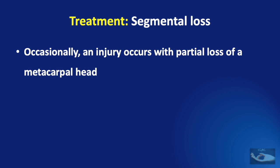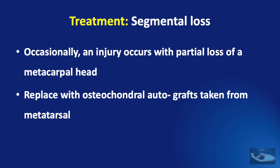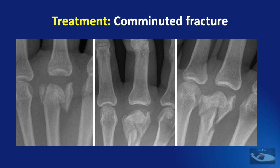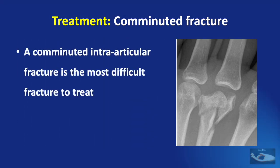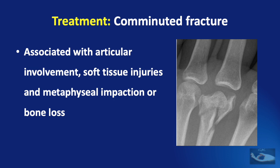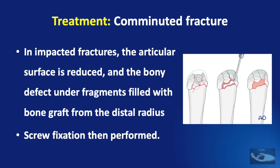In metacarpal head fractures with segmental bone loss, it is important to replace the bone loss with osteochondral autografts taken from the metatarsal bones. Comminuted fractures are quite common among metacarpal head fractures and among the most difficult to treat, as articular involvement may be associated with soft tissue injuries and metaphyseal impaction or bone loss. If the fractures are impacted, the articular surface is reduced, the bony defect is filled with bone graft from the distal radius, and screw fixation is performed.